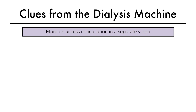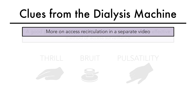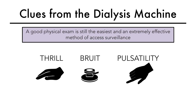Unfortunately, arterial and venous pressure changes and recirculation may not occur until advanced stenosis has set in. A good physical exam is still the easiest and an extremely effective method of axis surveillance.